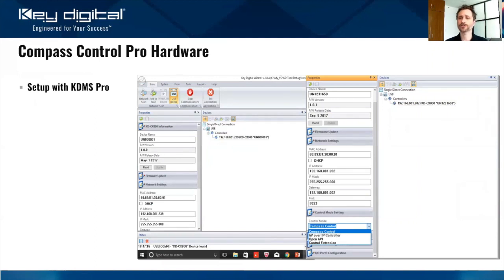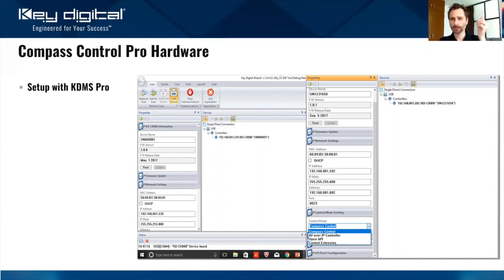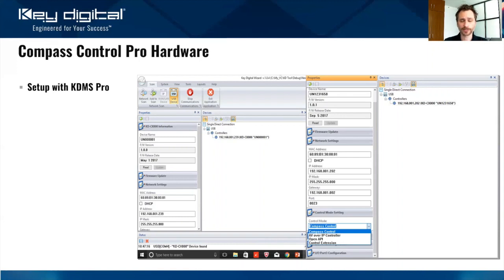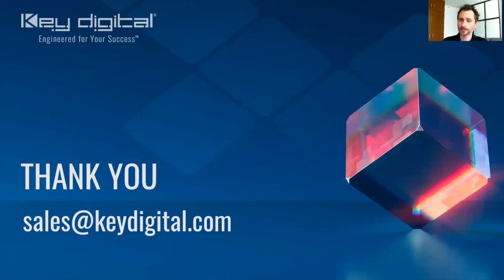All of these systems are set up with the Key Digital Management Software Pro — KDMS Pro — which you can download from our website. Connect via USB or over the network, hit scan for the device, set the IP address and name. If you have multiple master controllers, name them MC1, MC2, MC3 or MC Encoder 1, Encoder 2, etc. Update the firmware if needed — it's all very quick and well done in the Key Digital Management Software. That really gives you everything you need to know about Compass Control Pro. Thanks for attending the C1 certification course.